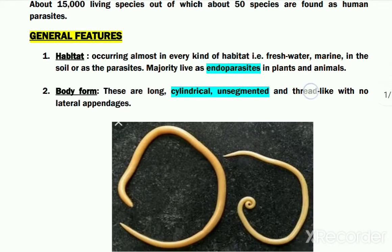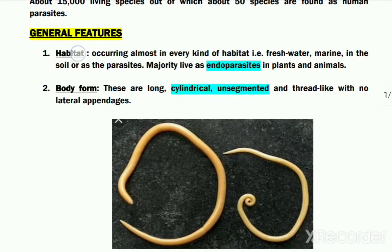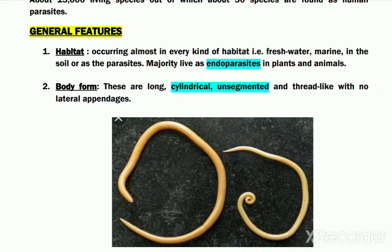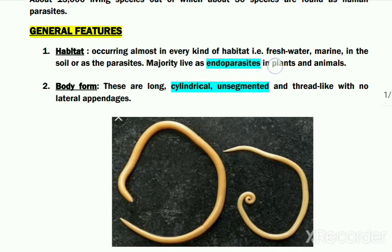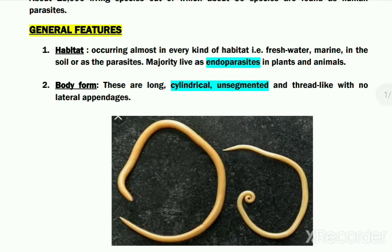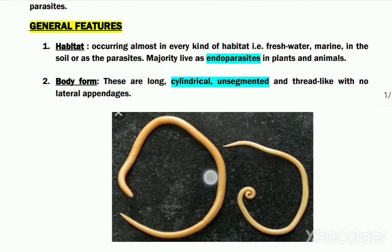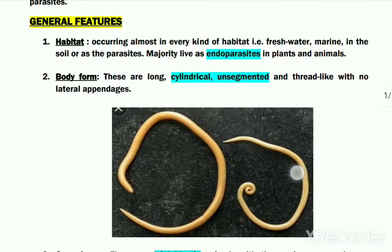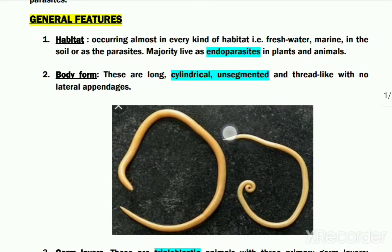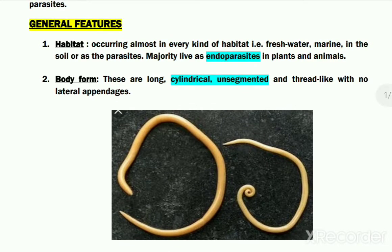Let us now take a look at their general features. First, about their habitat: sk-helminths occur almost in every kind of habitat, but most of them live as parasites in animals and plants. Regarding their body form, here is a photograph of Ascaris, which belongs to this phylum. These organisms have a cylindrical, unsegmented, thread-like body and do not have any lateral appendages.